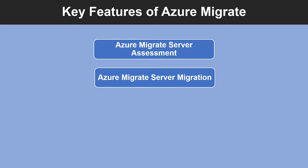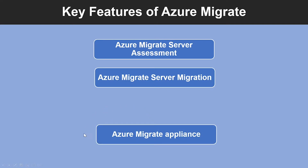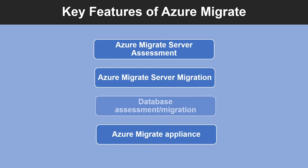You can also migrate using third-party tools. Another feature is the Azure Migrate appliance — a lightweight appliance deployed for discovery and assessment of on-premises VMware VMs and Hyper-V VMs, used for agentless migration and continuously discovering server metadata and performance data. Additionally, you can use Azure Migrate for database assessment and migration using the Data Migration Assistant (DMA), and migrate on-premises databases to Azure using Azure Database Migration Services (DMS).